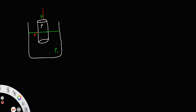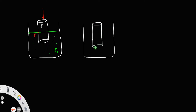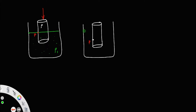Now, what will happen if you push the cylinder downward with a force? If you push the cylinder downward, the point p will be inside the liquid surface. The level of the water will rise slightly. This is the new level, and the original level is below it — you can see there is a rise in the liquid. The new point q on the cylinder is now on the surface of the liquid.